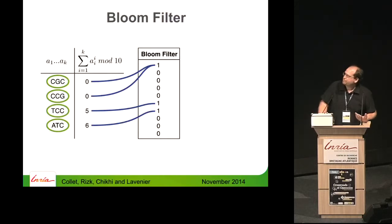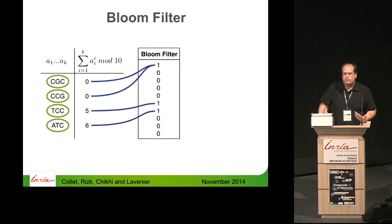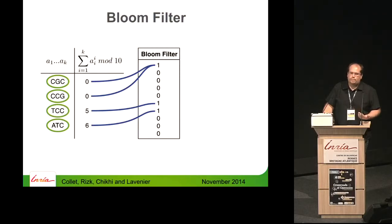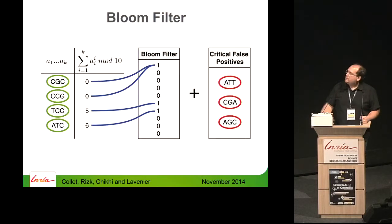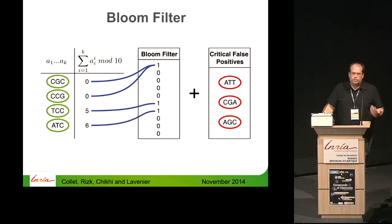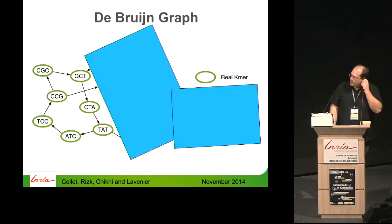The Bloom filter is well-fitted for that. It is just a vector of bits. For each K-mer, you apply a hash function which gives you an index in the vector and you put the bit to one — a very simple and very compact data structure. The problem is, because you use hashing, you have collisions, and different K-mers may point to the same bit. So if the bit was set by one K-mer, you may find false positives. And storing all false positives would be too big.